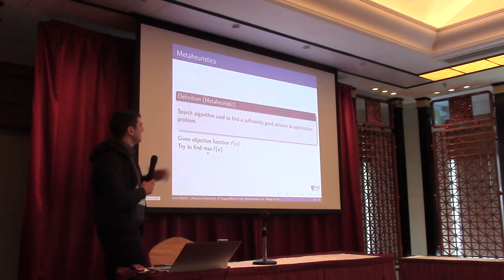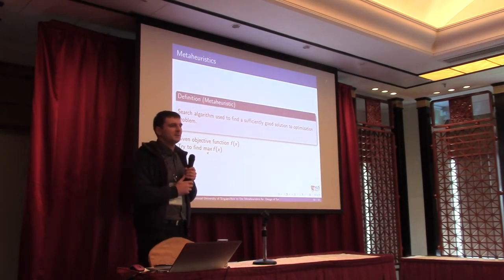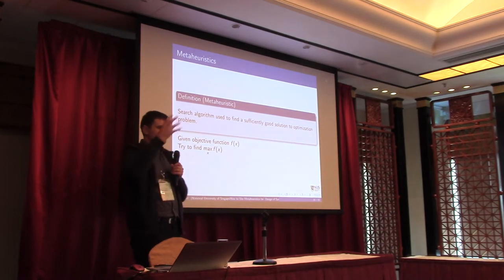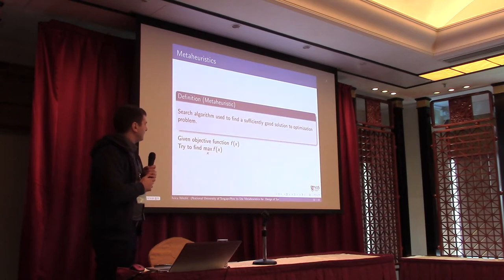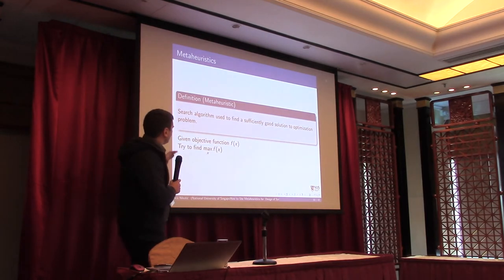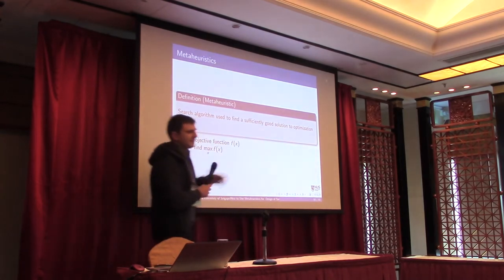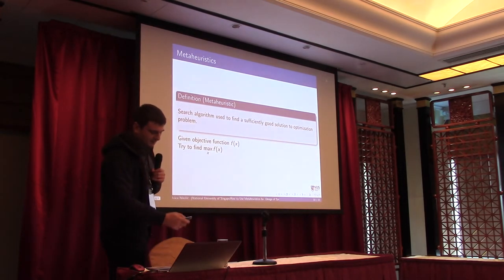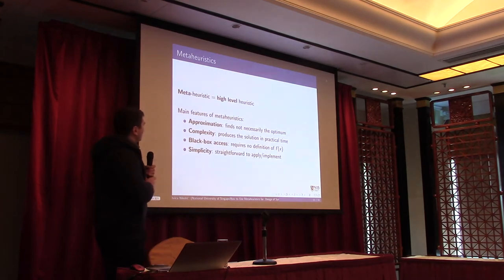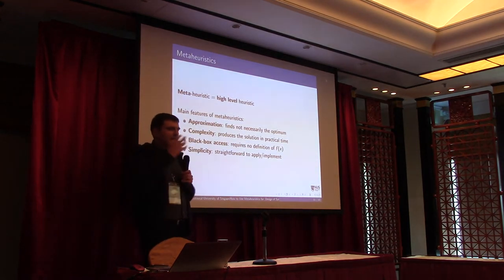This new strategy consists of metaheuristics. A metaheuristic is a partial search algorithm used to find a sufficiently good solution to an optimization problem. We have some objective function f(x) and we are trying to find the maximum. The emphasis is on 'sufficiently good solution' — same as in random search, which won't find the best but will find some sufficiently good solution. They are called metaheuristics because they are high-level, universal heuristics.